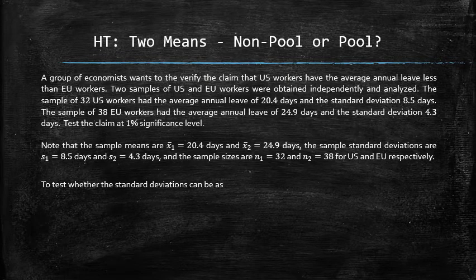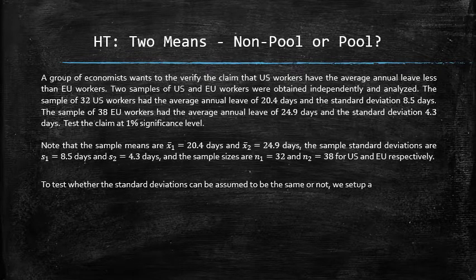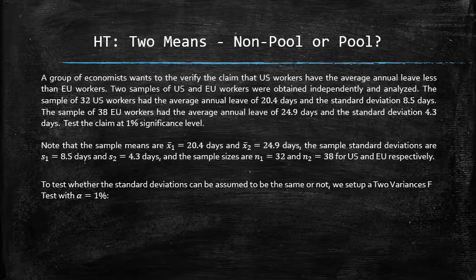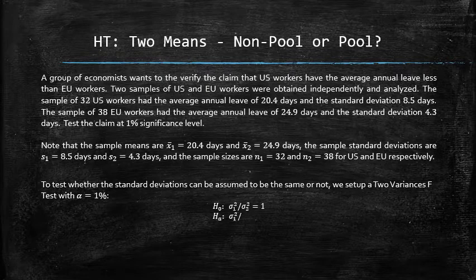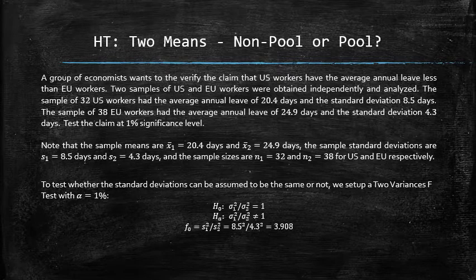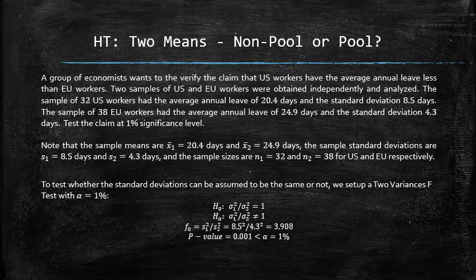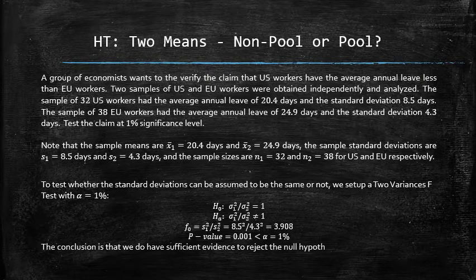We set up the two-variances F-test with alpha equal to 1%. The null hypothesis is that the variances are the same, and the alternative hypothesis is that the variances are different. We compute the test statistic f0, which is equal to 3.908. Using technology, the p-value is 0.001, which is less than alpha of 1%. We have sufficient evidence to reject the null hypothesis; therefore, we believe the variances are not equal and choose the non-pooled procedure.